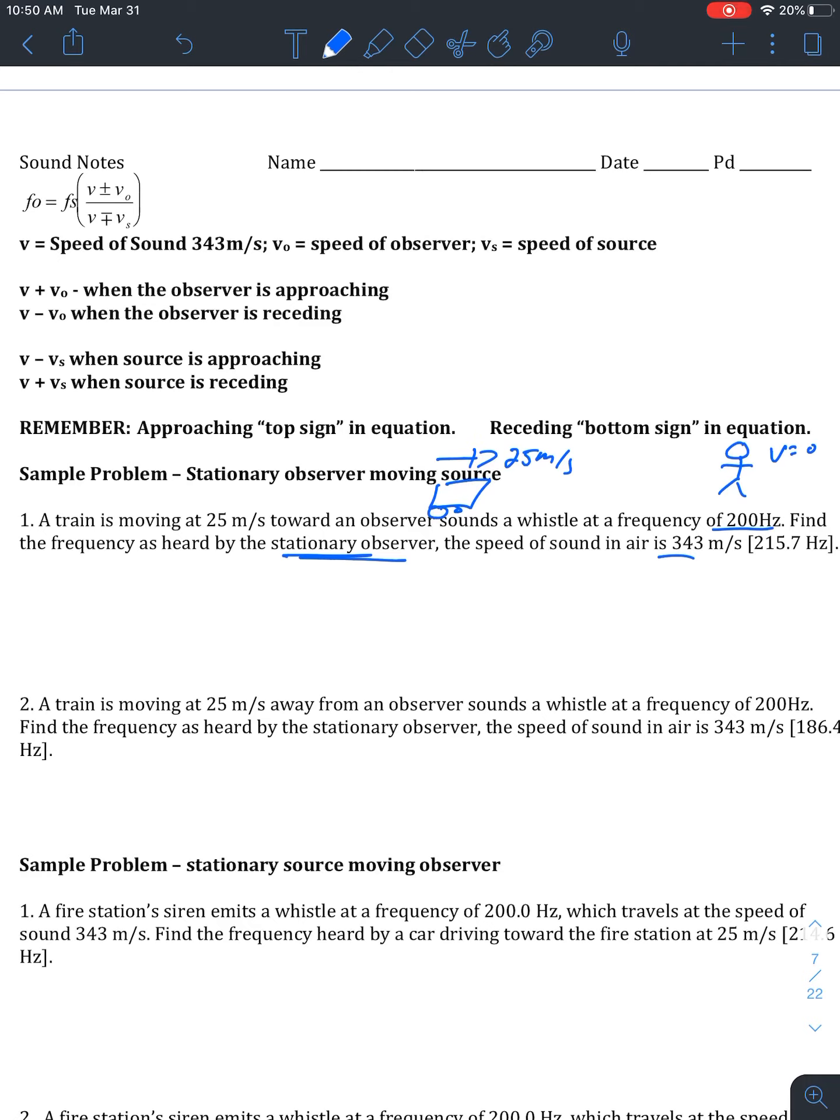So we need to figure out what sound is the observer going to hear. And just remembering the basic concept of the Doppler effect, it's that neural sound. So as something is approaching you making a noise, it's going to be higher pitch. As it's going away from you, it's going to be lower pitch. So in this case, the observer should hear something higher than that 200 hertz whistle.